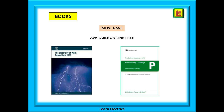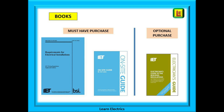We mentioned books earlier. You must have a copy of the Memorandum of Guidance on the Electricity at Work Regulations and a copy of Approved Document P — these are available free of charge online. You must also have BS 7671 Wiring Regulations (currently 18th Edition) and a copy of the On-Site Guide. Also useful is the Electrician's Guide to the Building Regulations — personally I find this the best of the books, full of pictures and tables, and extremely useful, though it is your choice whether to purchase it.